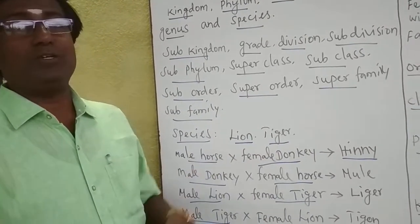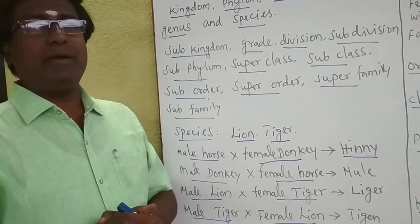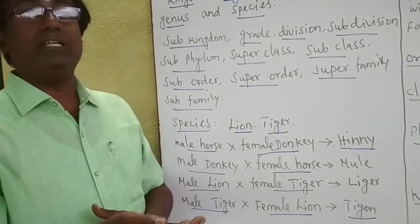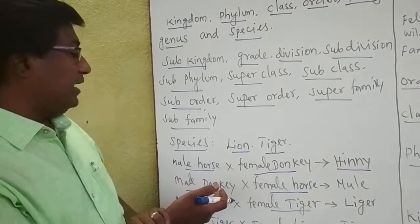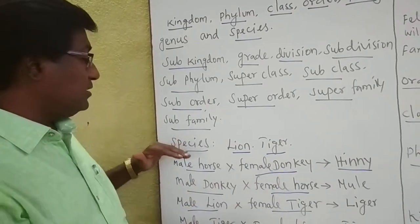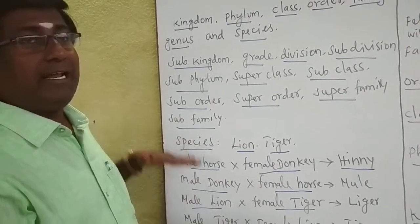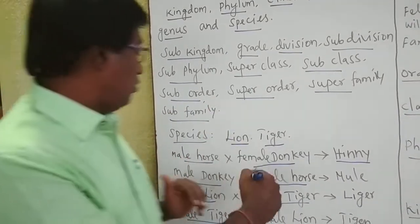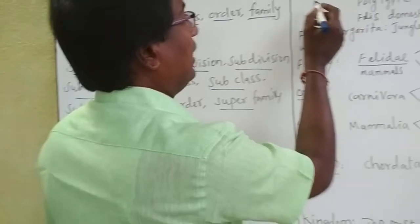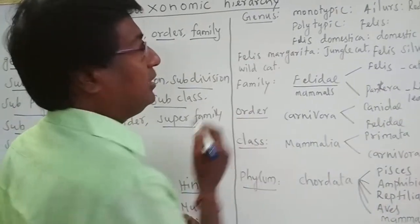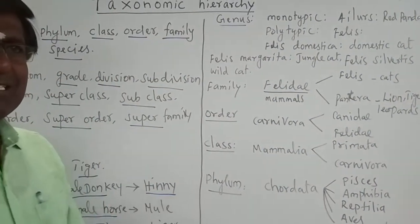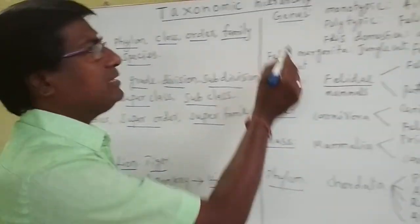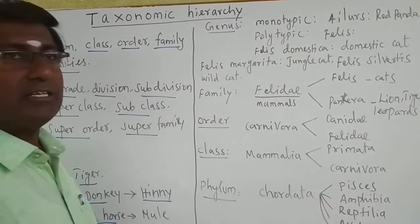These are some exceptions — closely related species interbreeding may not produce fertile offspring. But a species alone produces fertile offspring. This is the first and basic category of taxonomic hierarchy, called the species. Above the species, the next higher taxonomic category is called the genus.